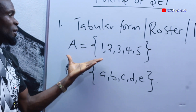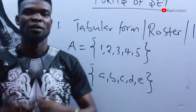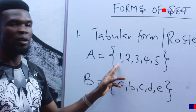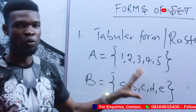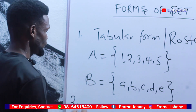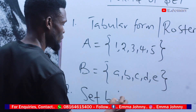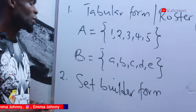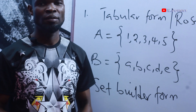So at this point we can say this is the listed form, tabular form, or roster form. In summary, when the elements of a set are written out clearly for you to see, then this is the listed form of sets. The second way is what we call the set builder form.